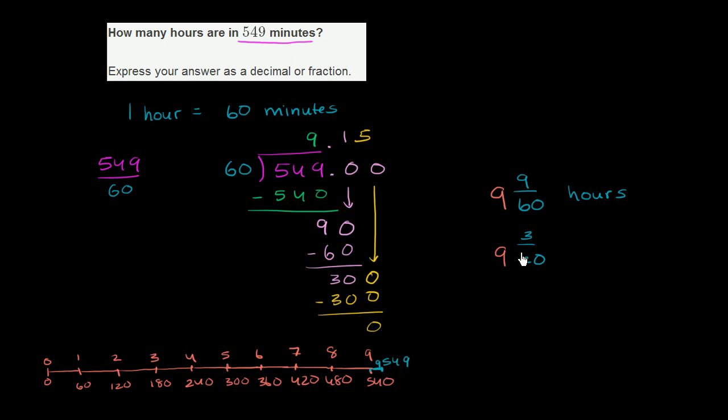And 3 over 20, well, we could figure out what that is going to be. 20 divided by 3. It's definitely going to be smaller than 1 because 3 is smaller than 20. So let's throw some zeros on here. The 20 doesn't go into 3, but it does go into 30 one time. 1 times 20 is 20.